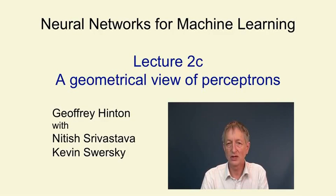In this video, we're going to get a geometrical understanding of what happens when a perceptron learns. To do this, we have to think in terms of a weight space. It's a high-dimensional space in which each point corresponds to a particular setting for all the weights. In this space, we can represent the training cases as planes, and learning consists of trying to get the weight vector on the right side of all the training planes.